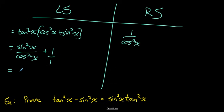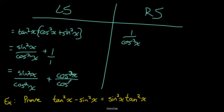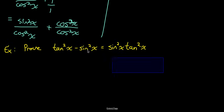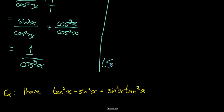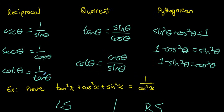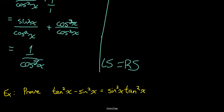So the left side equals the right side — we've proven the identity using the primary identities. For time's sake we'll skip another practice example and move on to the trig functions section.